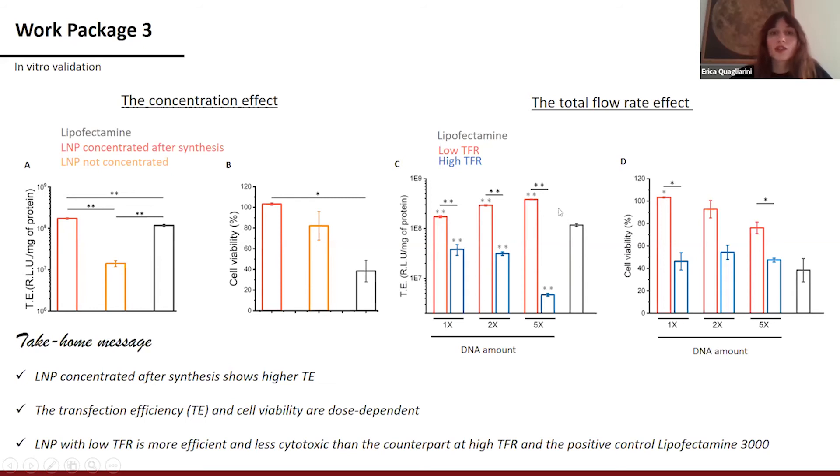So another observation was that with the increasing of the DNA amount, the transfection efficiency of the lipid nanoparticle at low total flow rates increased. But an opposite trend was found for the complexes generated at high total flow rates. So to better interpret this behavior, we decided to perform a cell viability assay. And we can see that for the complexes at low total flow rates, the cell viability values were higher than 70% in all the three conditions. As for the lipid nanoparticles at high total flow rates, they resulted in all the conditions highly cytotoxic, with a value similar to Lipofectamine.